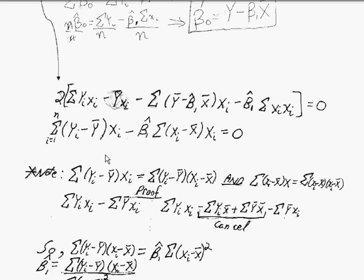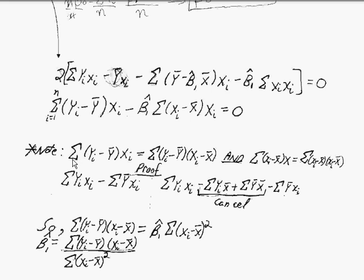In order to go further in getting towards the formula for finding the slope that minimizes the sum of the squared residuals, you need to realize this is not obvious, but this term, sum of the y_i minus y-bar times x_i, is the same as the sum of y_i minus y-bar times x_i minus x-bar. Here's a little demonstration of this.